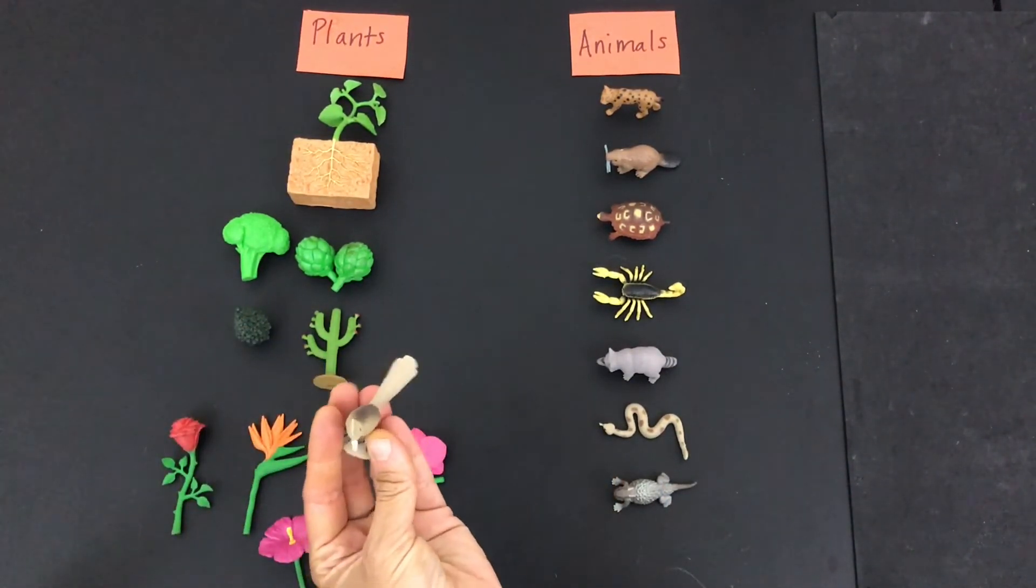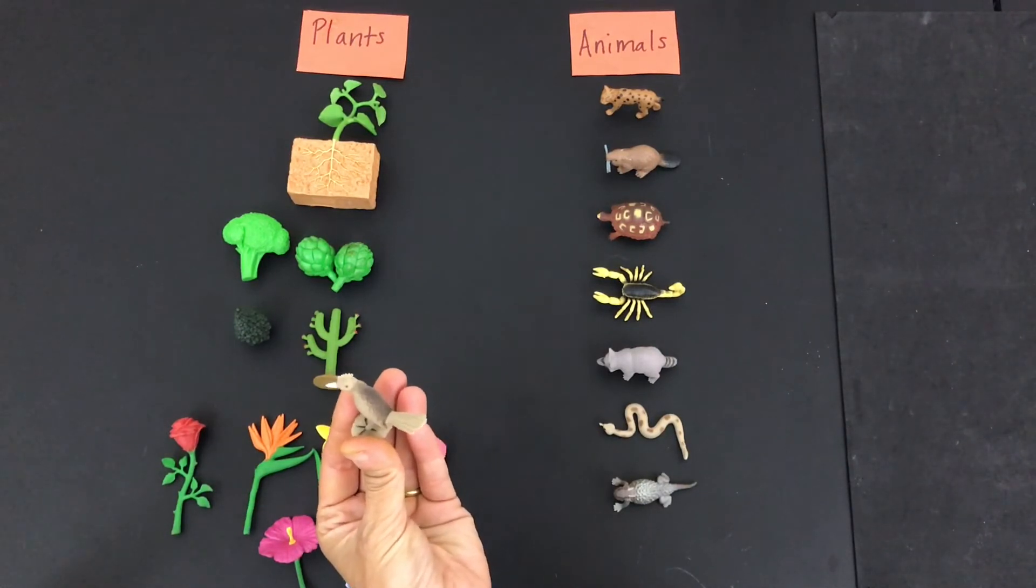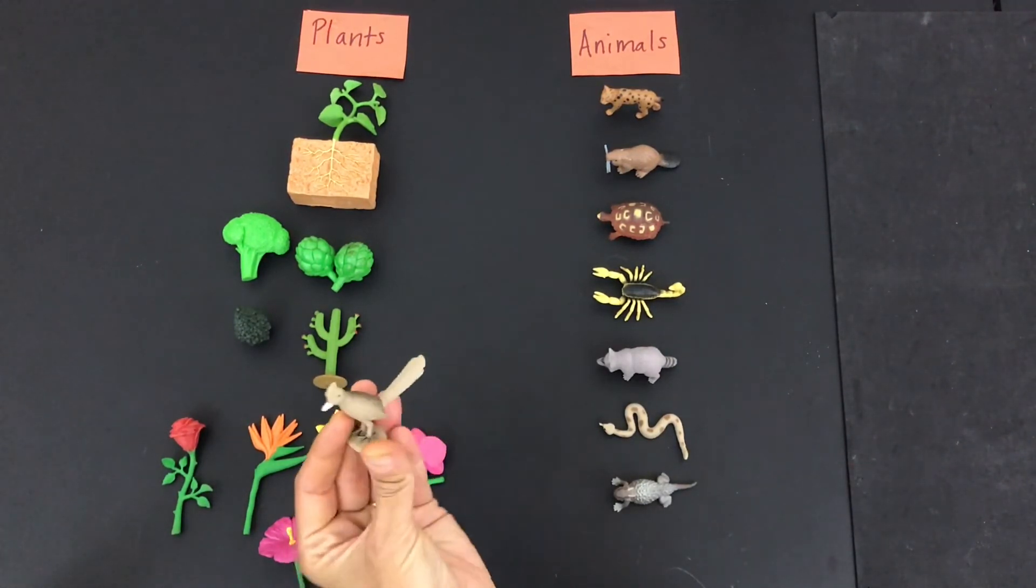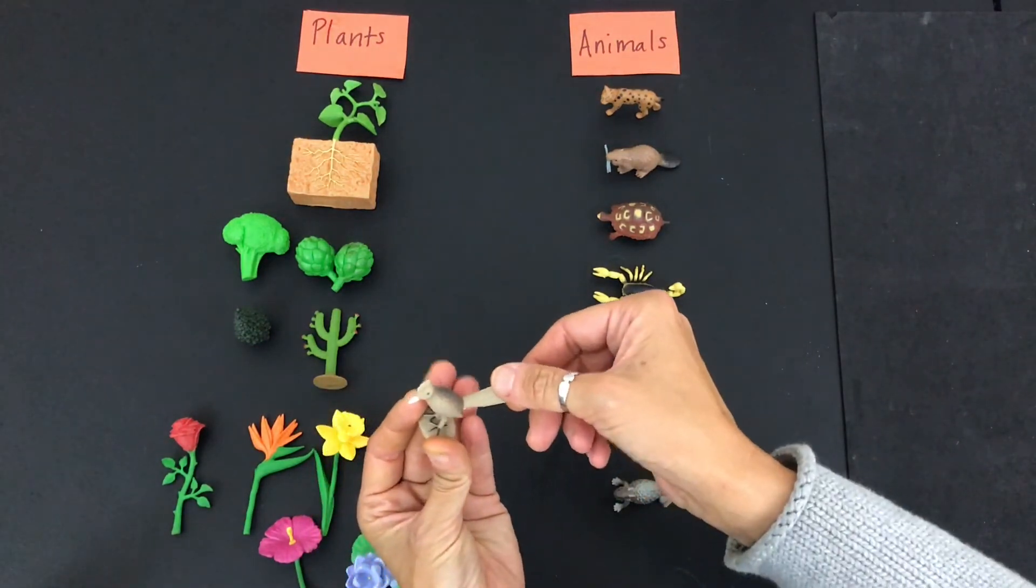And birds are also part of the animal kingdom, right? So that's a road runner that lives in the desert.